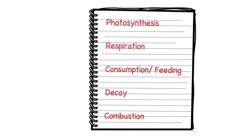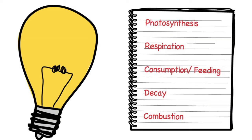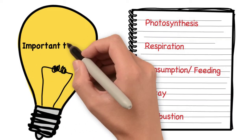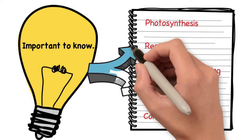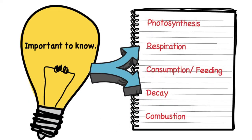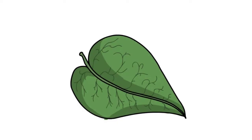To ensure that carbon is available and is constantly recycled, there are certain key processes that are involved in the carbon cycle. Photosynthesis, respiration, consumption and feeding, decay, combustion and weathering, and you should know where each of these fit in the cycle and the role they play.